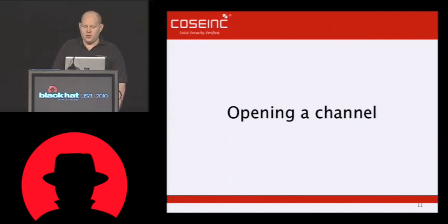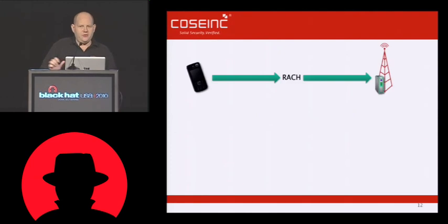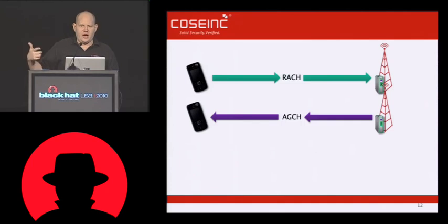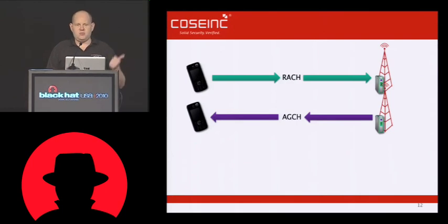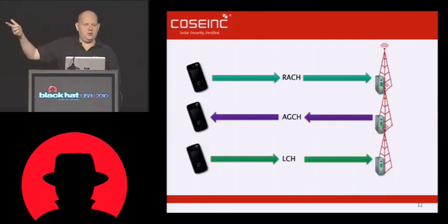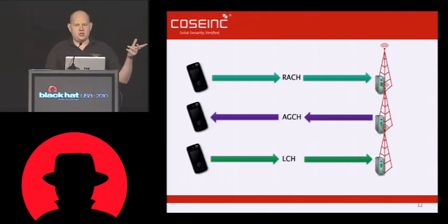Now let's look at how a channel is opened — it's actually fairly straightforward. The phone makes a request on the RACH, and this request is basically made up of a random 25-bit value — strong security at work. The phone sends a request to the tower; the tower finds an open channel and puts that information in the access grant channel response. It sends back: the person who made request 01 now has this time slice, this channel, this frequency, etc. The phone can then attempt to make the connection using that information. It's pretty much asynchronous — the phone makes a request, and if it gets a response, it can associate on that channel.